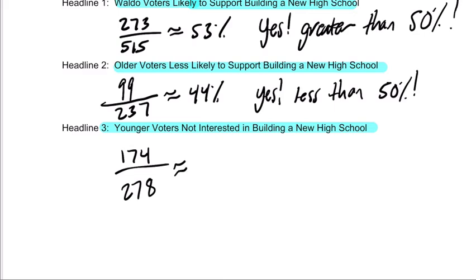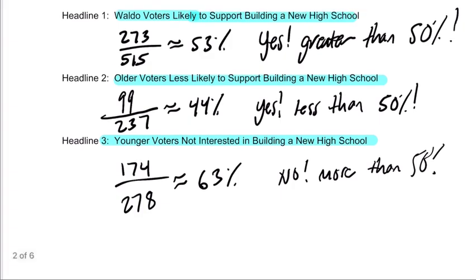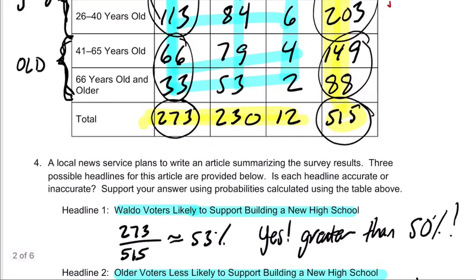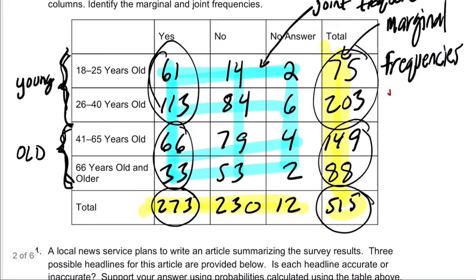So now we've got a probability in there. I'm just scrambling for my calculator. Okay. So it's 174 divided by 278. It's about 63%. I'd say no. I don't agree with this headline. Bogus. It's wrong. They voted yes more than 50% of the time. So that means they're more likely to actually support it. So there are some subjective terms in here, but I think otherwise we can analyze it. All right. I hope that helped.